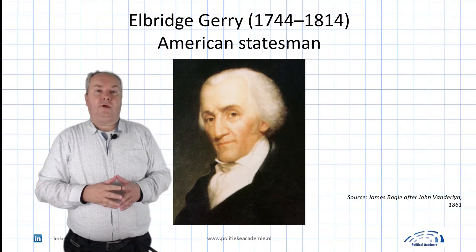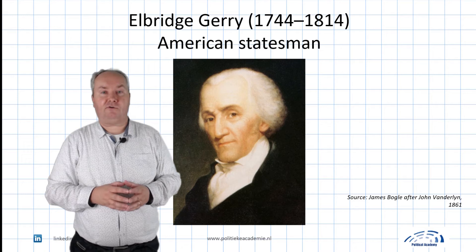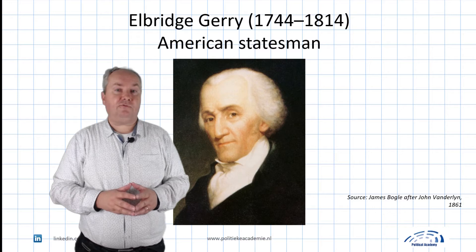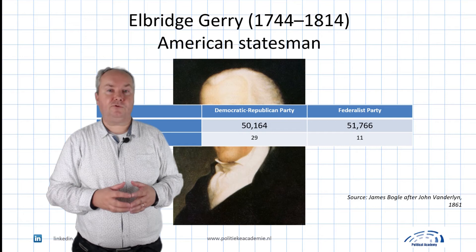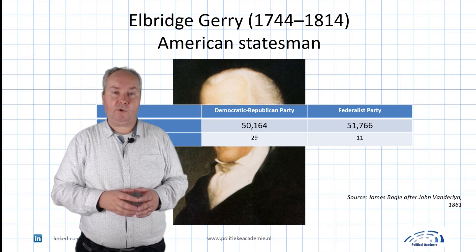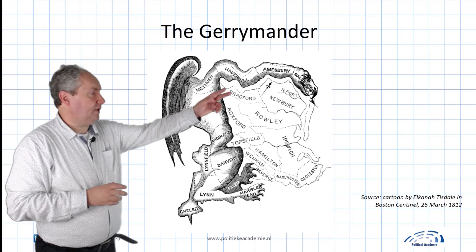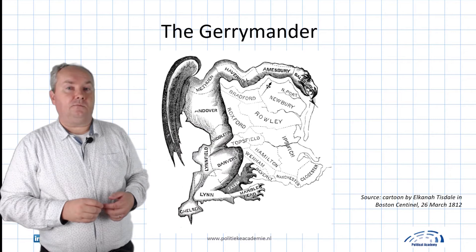Gerrymandering has become the synonym for redrawn district lines to get a more favorable outcome. In 1810, Elbridge Gerry was elected governor of Massachusetts. In 1812 he signed the Massachusetts Senate districting bill. The effect was remarkable: although his party lost the popular vote 50,164 to 50,766, in the Senate they won 29 to 11. It was clear that the redistricting had worked in the favor of Gerry's party. Already in March 1812, the artist Elkanah Tisdale — often misattributed to Gilbert Stuart — noticed the strange new map of the Essex district. He added a head, wings, and claws, and said, 'That will do for a salamander.' 'Better say a Gerrymander,' replied the editor Benjamin Russell.